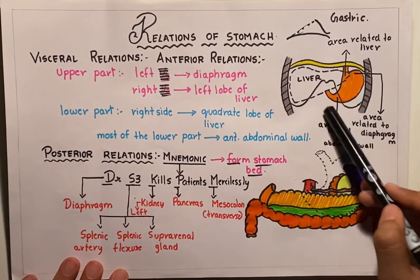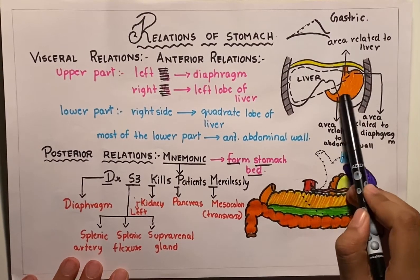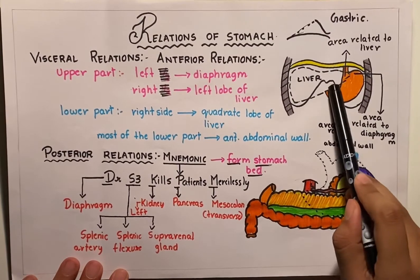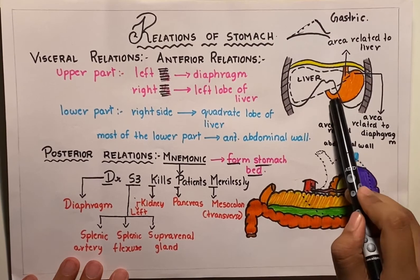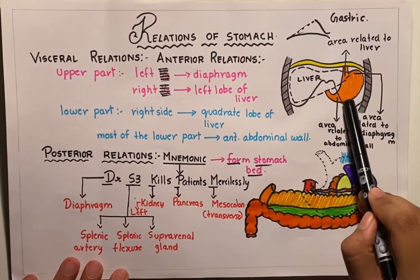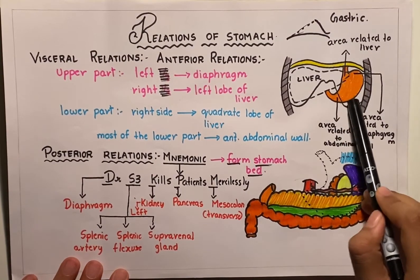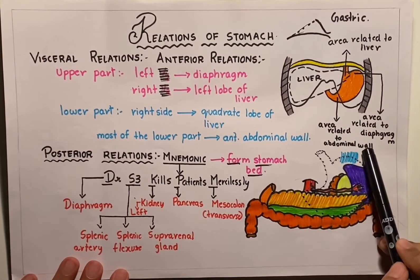In the lower part, the right side is related to the quadrate lobe of the liver, whereas most of the lower part, other than this region, is related to the anterior abdominal wall.